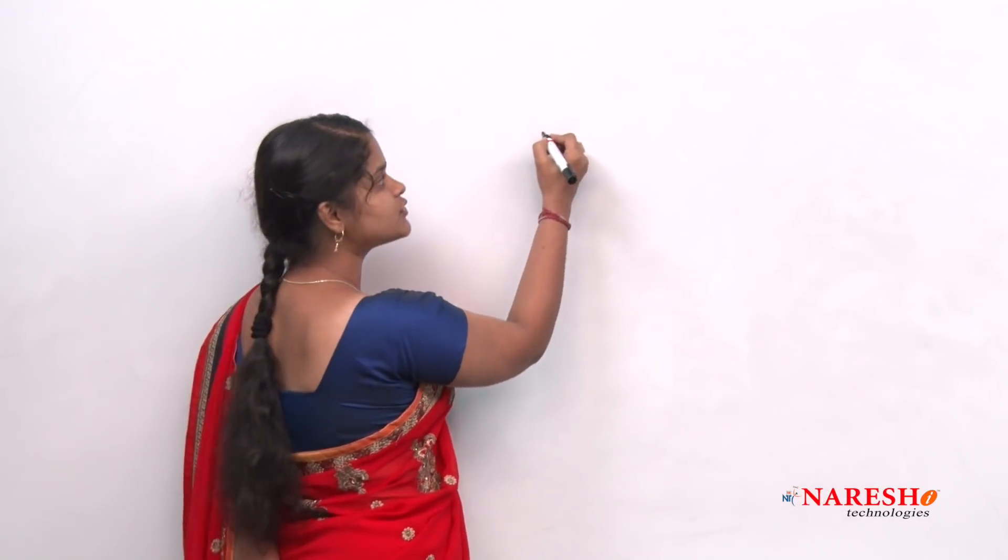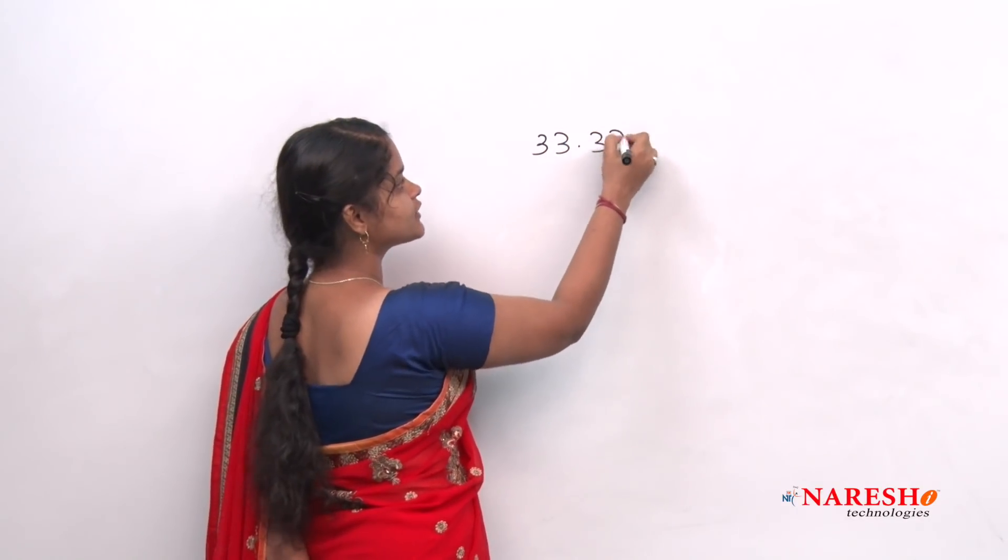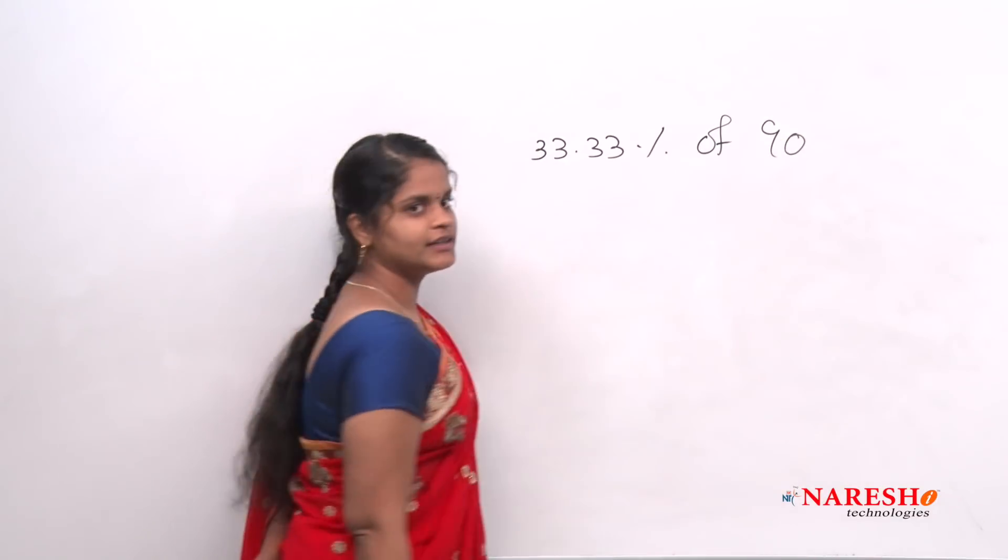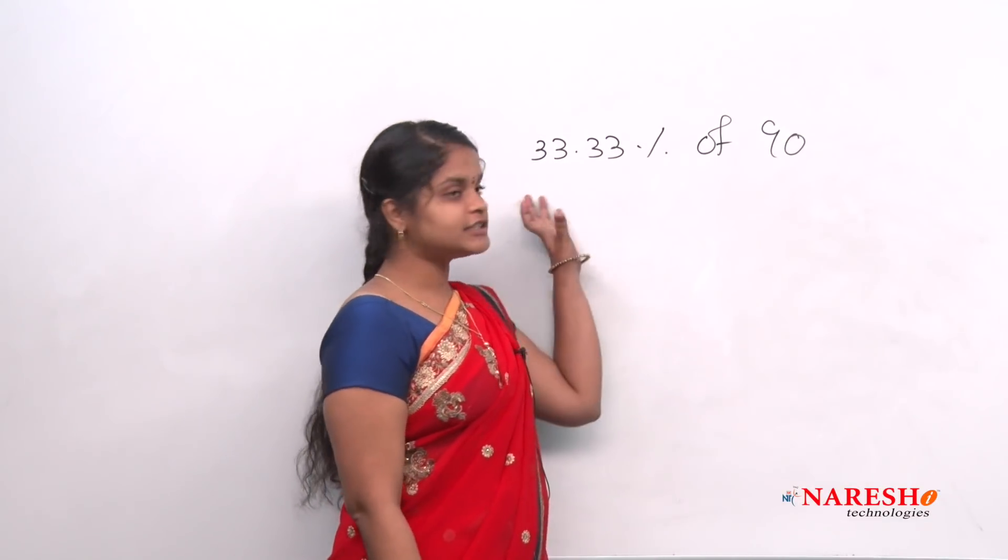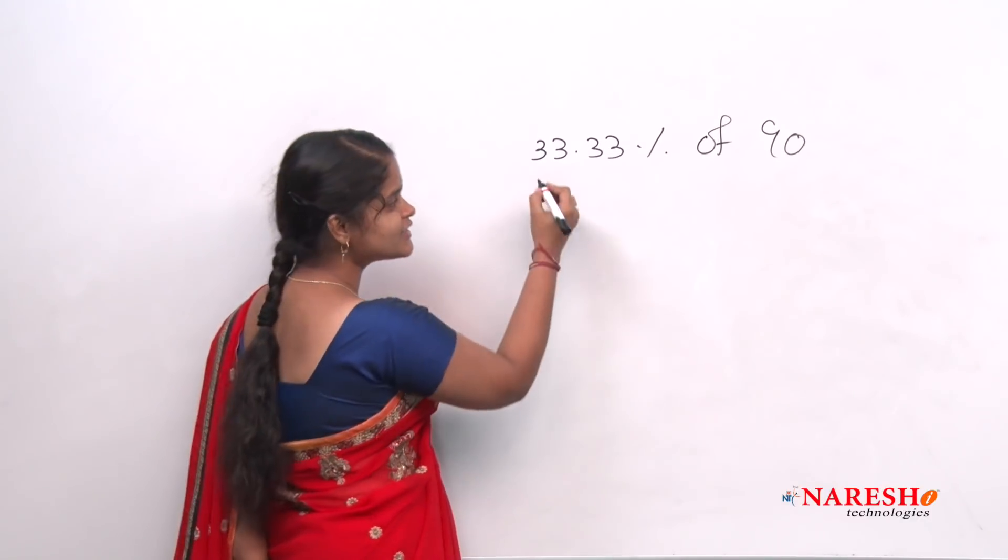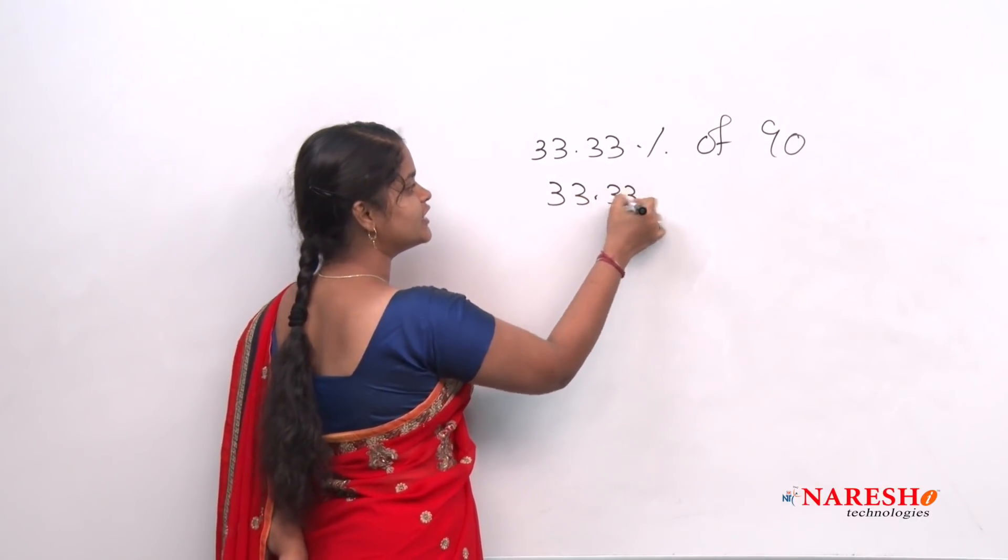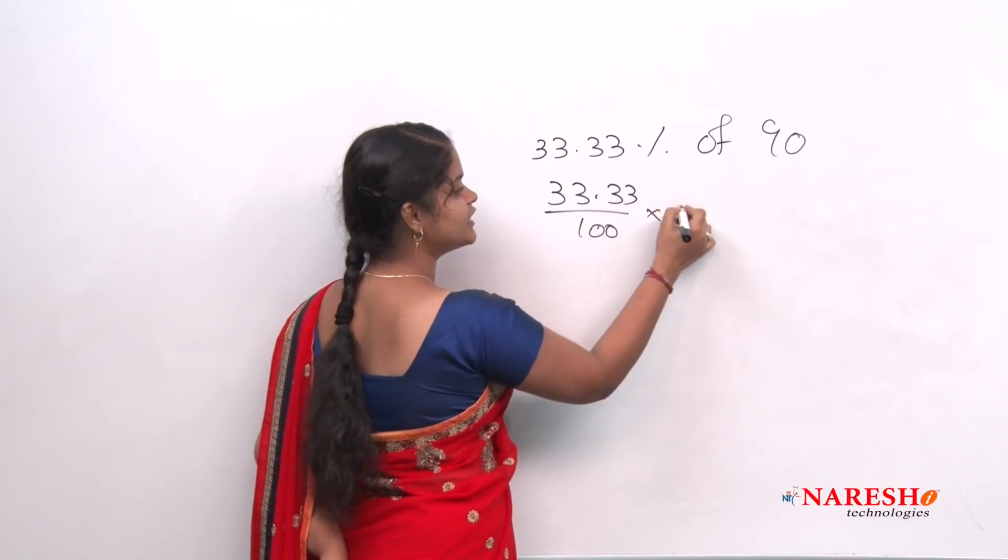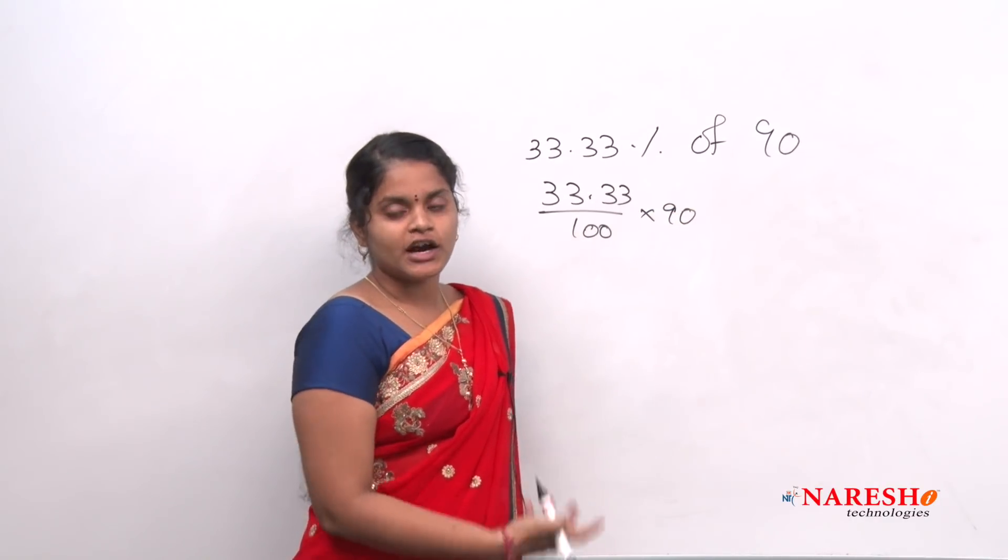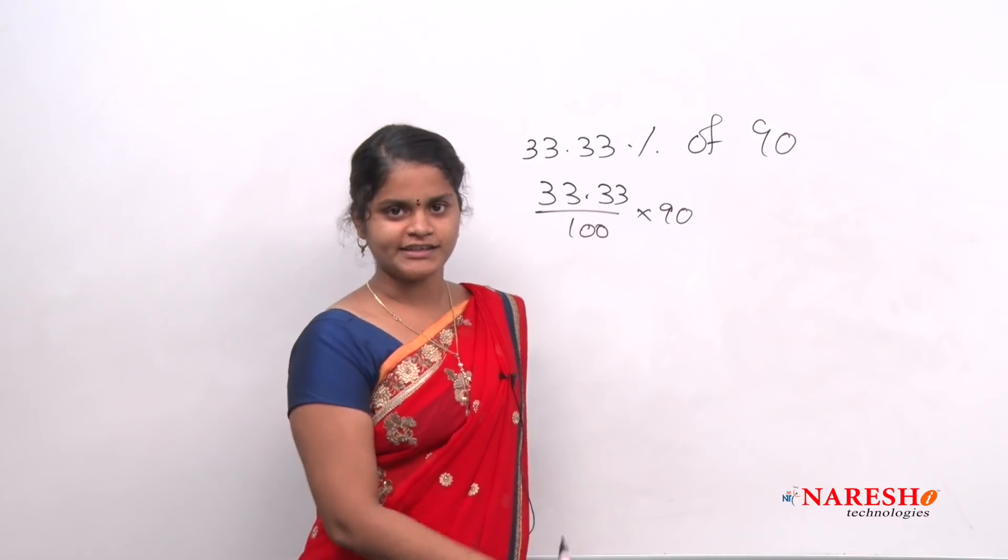So today we are going to see, for example, there is 33 percentage of 90. I want to find 33.33 percentage of 90. Is it so easy to calculate? See, 33.33 divided by 100 into 90. It is very difficult right. So let us see how to solve these type of problems in a easy manner.